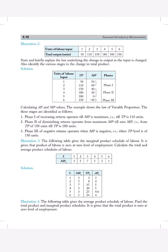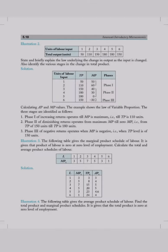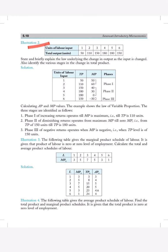Just moving to another illustration. Unit of labor is given. Total output is given. And we have to find out the marginal product and phases. Same as the previous illustration.